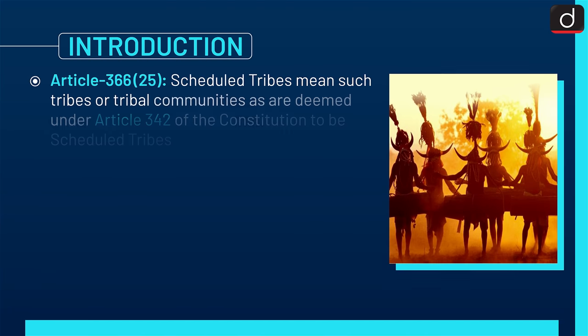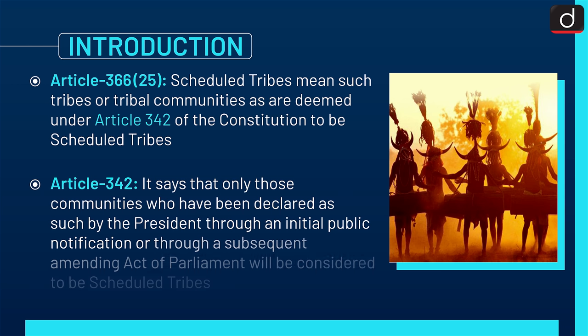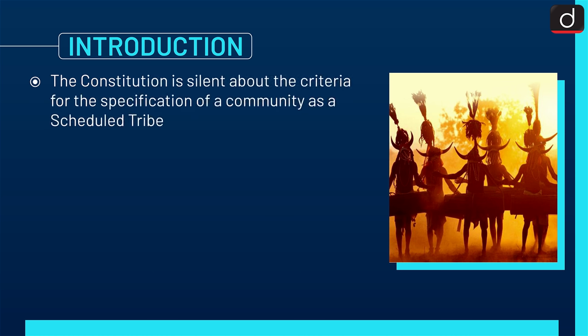According to Article 366-25, Scheduled Tribes mean such tribes or tribal communities as are deemed under Article 342 of the Constitution to be Scheduled Tribes. Article 342 says that only those communities declared as such by the President through an initial public notification or through a subsequent amending act of Parliament will be considered Scheduled Tribes. Point to be noted is that the Constitution is silent about the criteria for the specification of a community as a Scheduled Tribe.